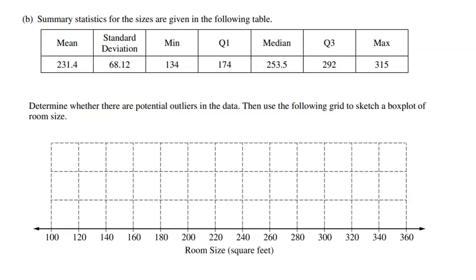All right, part B gives you some summary statistics. So be careful. This is part B, right? So these summary statistics should not be used in part A at all. Part A wanted me to give an answer solely based on the distribution seen in the histogram. All right, so here we give some more information: mean, standard deviation, min, Q1, median, Q3, max, all this fun stuff. And it says determine whether there are any potential outliers in the data and then use the following grid to make a box plot of the data. Now, I cannot make a box plot until I first identify outliers.